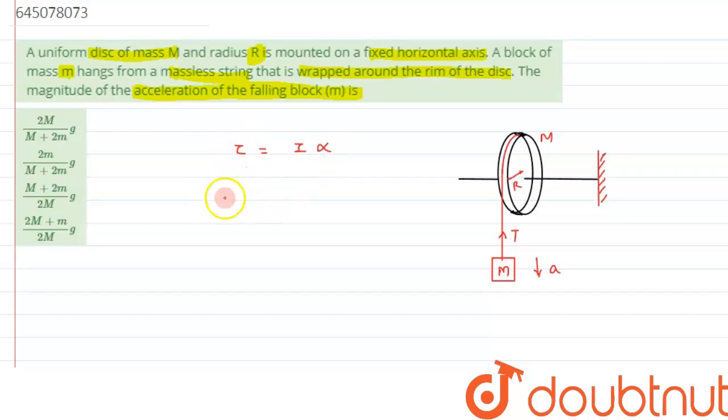We know torque is radius times the force, which is tension, since both are perpendicular. Torque is force times perpendicular distance, that is R×T. This can be written as I for the disc, which is MR²/2.